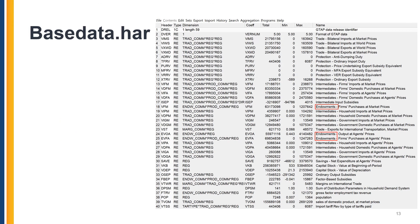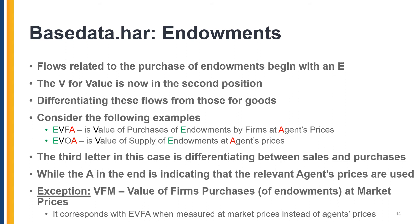We now turn to flows related to endowments instead of goods. Coefficients for these flows begin with an E for endowment; the V for value is now in the second position. This helps differentiate flows of endowments from flows of goods. Examples are EVFA, the value of purchases of endowments at agents' prices, and EVOA, the value of sales of endowments at agents' prices. The EV at the beginning tells us this is an endowment-related flow, while the third letter differentiates between purchases and sales. The last letter again indicates the price at which the flow is measured.